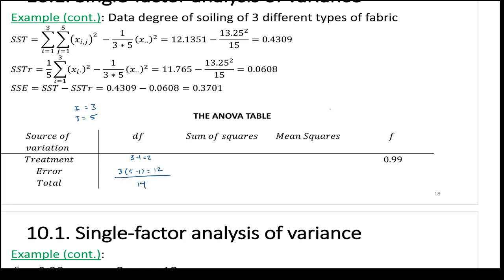Now calculate SST, SSTR, and SSE. SST comes out to 0.4309. SSTR is 0.0608. SSE is SST minus SSTR, which is 0.3701.